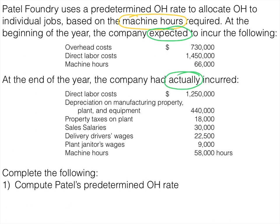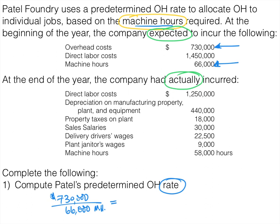Question one asks us to compute Patel's predetermined overhead rate. Remember: estimated overhead divided by estimated allocation base. The estimated overhead is $730,000. Our allocation base is machine hours, so we use 66,000 estimated machine hours. Note that direct labor hours and direct labor cost are not needed here — that was additional information not required for this particular problem.